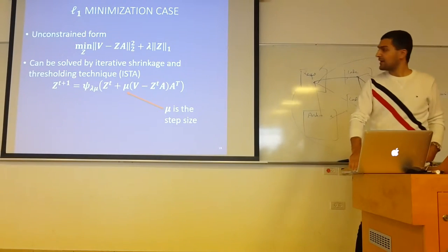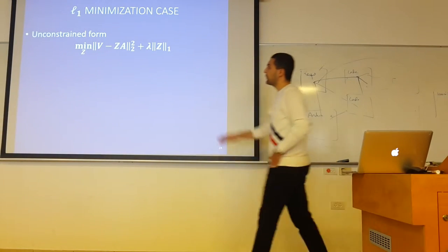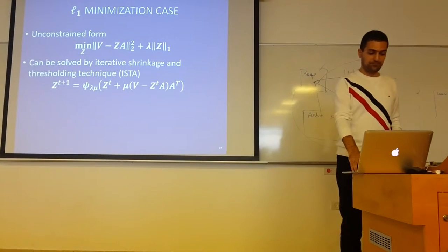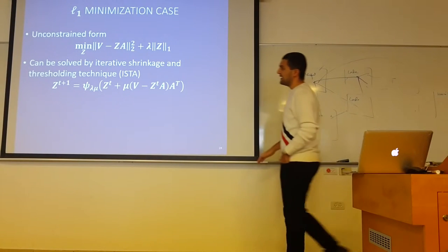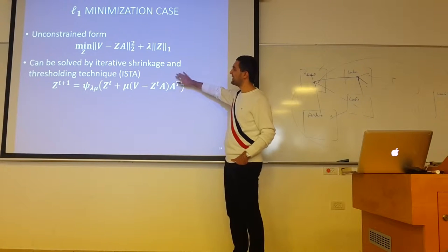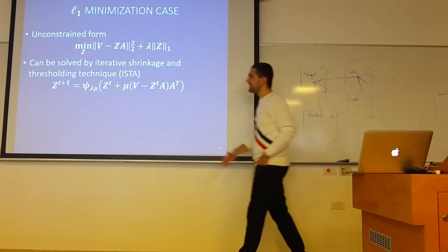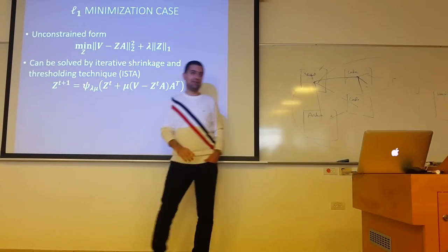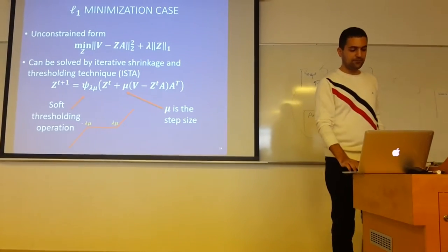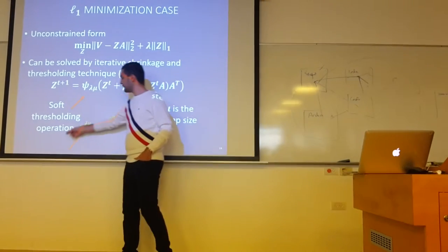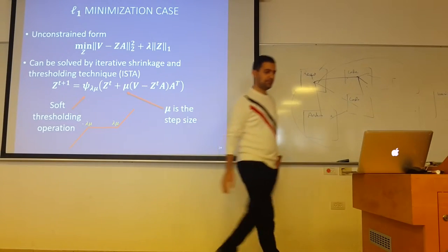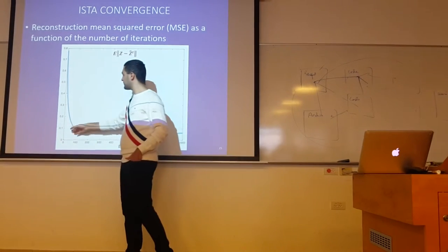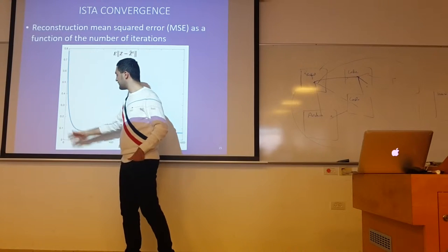One very popular minimization problem following that is the L1 minimization, where the penalty function is the L1 norm. This minimization problem can be solved by the iterative shrinkage and thresholding algorithm — ISTA. What it does is take a gradient step followed by shrinkage, which is a simple nonlinearity — the soft thresholding operation. It has a certain convergence rate and needs several hundred iterations to converge.